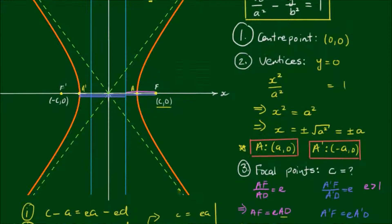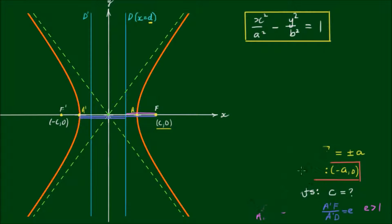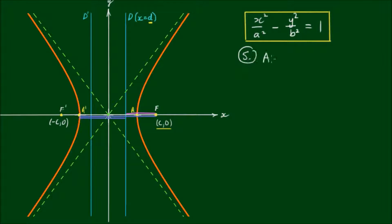The final feature we need to fully describe a hyperbola are the asymptotes, shown here by the green dashed lines. As the curve of the hyperbola gets further and further away from the origin, the curve becomes straighter and straighter, becoming more and more in line with the green dashed line — but it will never touch or cross the dashed line. That's why we call them asymptotes: as we tend to infinity, the curve gets infinitely close to the dashed line but will never touch.